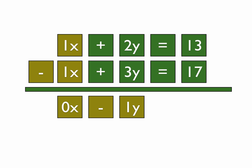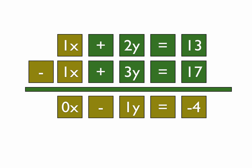And finally, we have the last part. We have 13 minus 17. The negative is bigger, and so the answer comes out negative 4. And when you look at the whole answer that we get, we have 0x minus 1y equals negative 4.